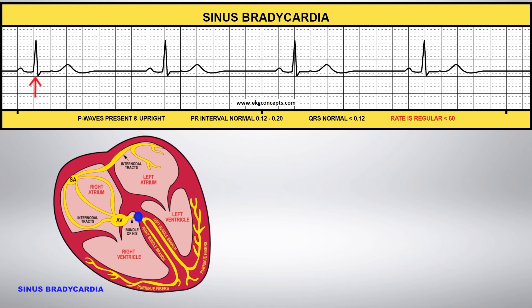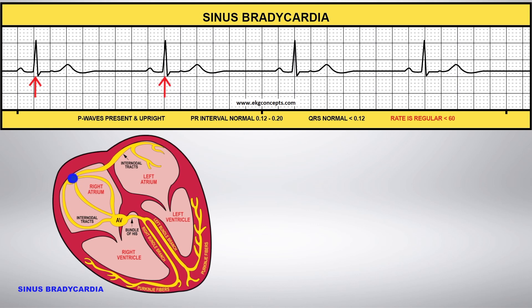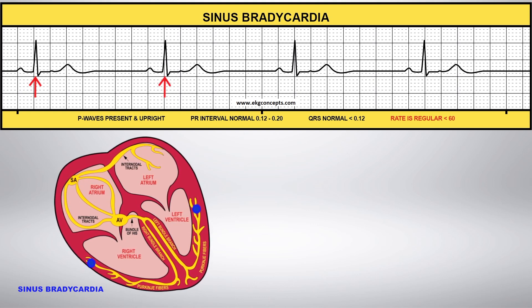Sinus bradycardia originates in the SA node and follows the normal conduction pathways. However, the heart rate is less than 60 beats per minute.